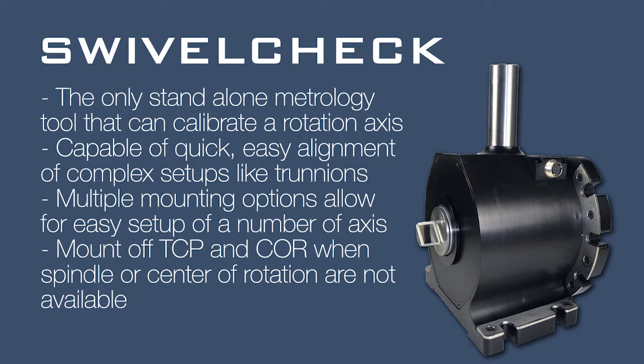The swivel check is the only standalone metrology tool that can calibrate a rotation axis. It's capable of quick and easy alignment of complex setups like trunnions, has multiple mounting options to allow for easy setup of a number of axes, and can mount off tool center point and off center of rotation when the spindle or center of rotation are not available.